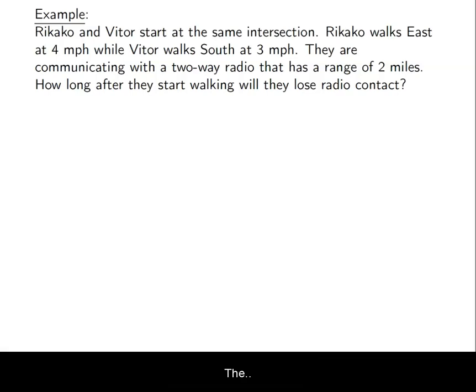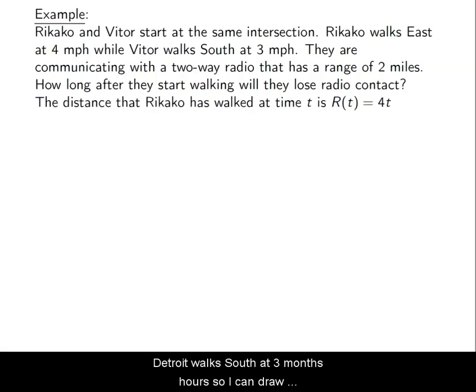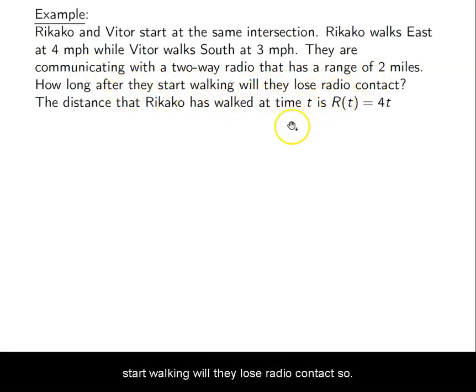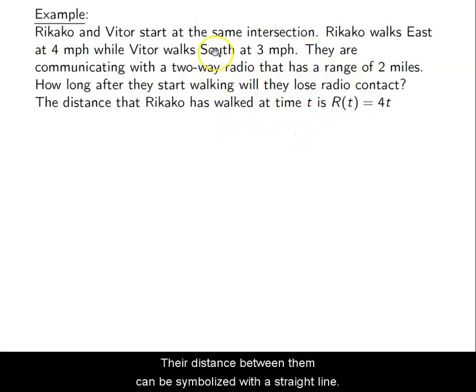Rikako walks east at four miles per hour, so I can draw a line to the right and label it with a four. Vitor walks south at three miles per hour, so I can draw that down and label it with a three. They're communicating with a two-way radio that has a range of two miles. So how long after they start walking will they lose radio contact?